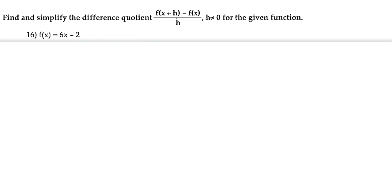For number 16, we're going to find and simplify the difference quotient for the given function. Here we have f of x equals 6x minus 2, and the difference quotient is f of x plus h minus f of x, all over h.